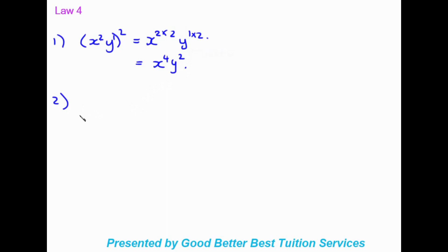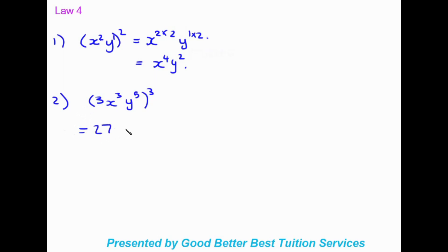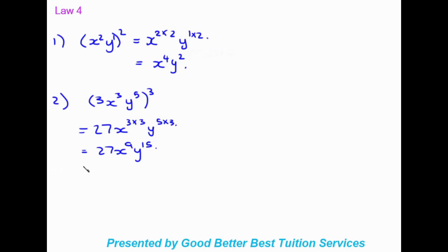Another example of law four: three x to the power of three, y to the power of five, all to the power of three. The number is cubed: three cubed is 27. Each variable is also affected by that exponent: x gives three times three which is nine, and y gives five times three which is 15. So the final answer is 27x to the power of nine, y to the power of 15.